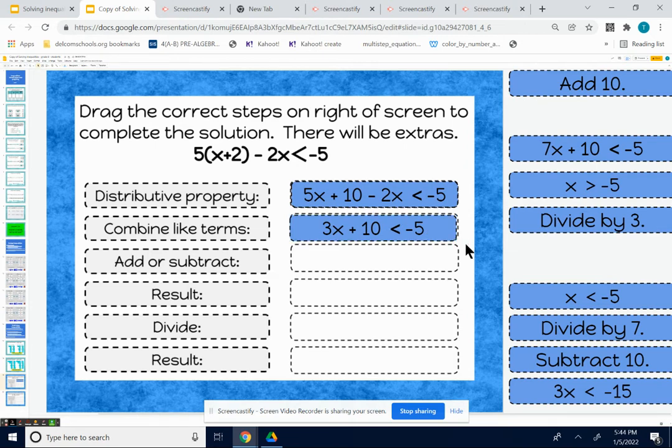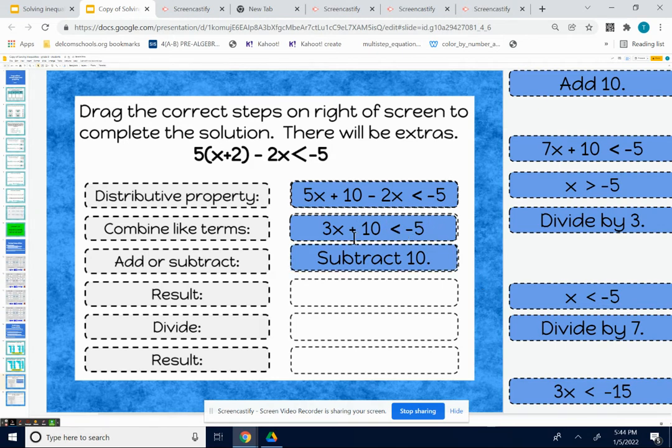Next thing you want to do is add or subtract. You want to add or subtract the number that's added or subtracted. We want to get rid of the added 10. So we want to subtract 10 because that's the inverse operation. And after we subtract 10 from both sides, that 10 is going to go out from the left. On the right, we're going to have negative 5 minus 10. So think of that as a negative 5 and a negative 10 added together. So we're going to have negative 15 on the right. So we're going to end up with 3x less than negative 15.